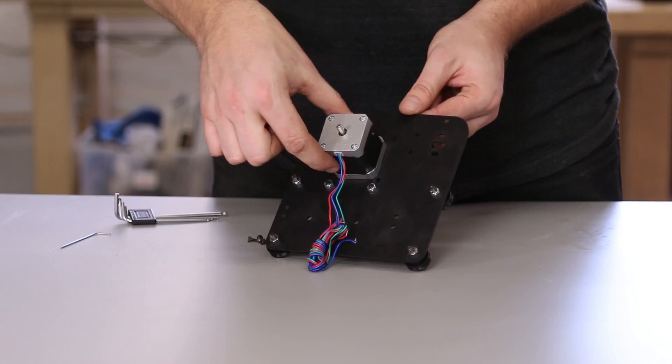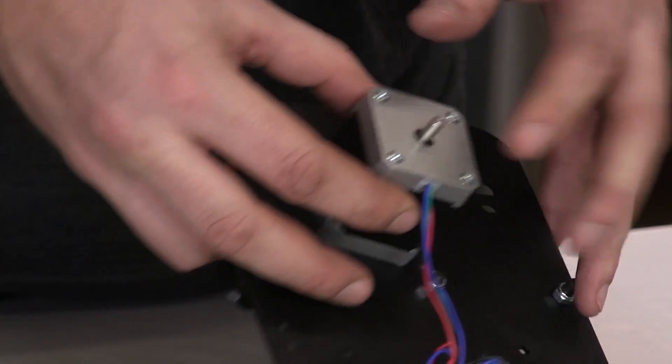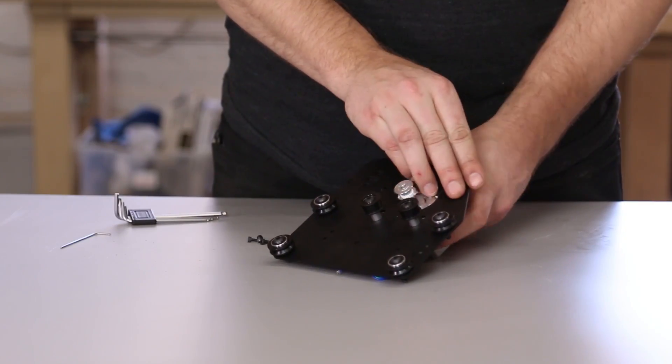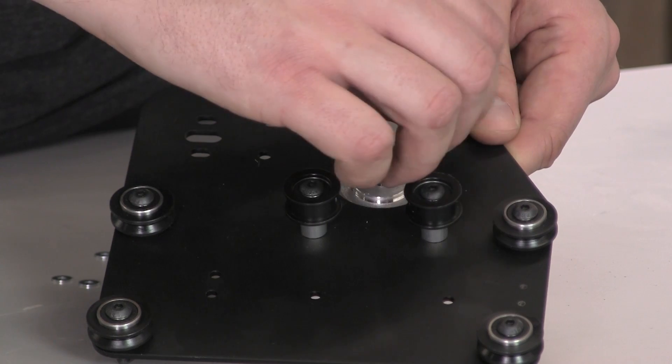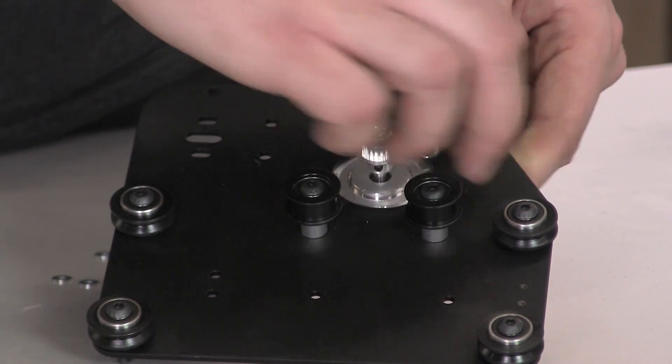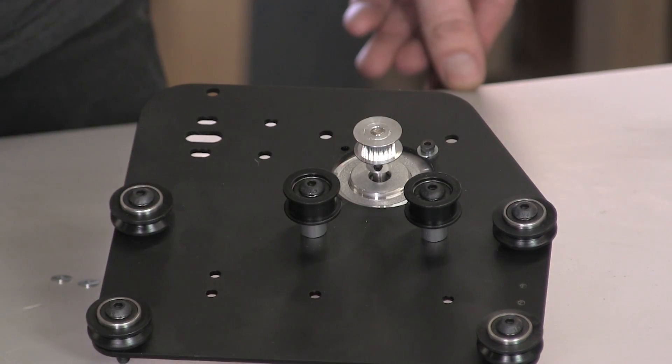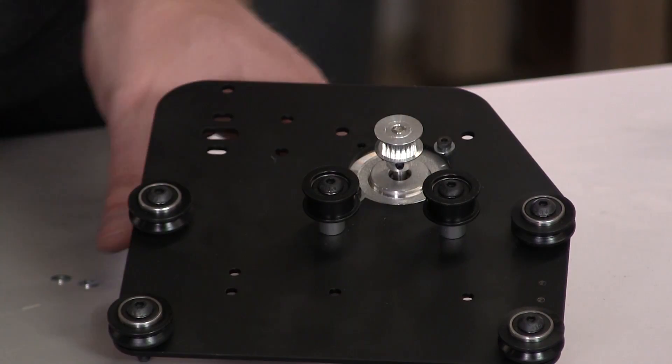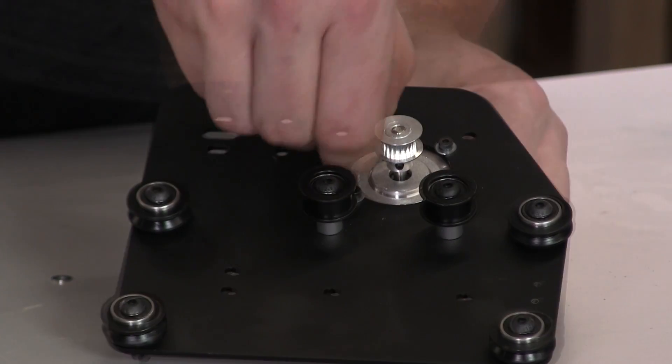We'll use four screws and four washers to attach the NEMA 17 to the Y plate. Put all of the washers onto the screws and then insert the screws through the Y plate and into the threading in the NEMA 17 motor. Get all the connections finger tight and then tighten them with moderate force in an X pattern.